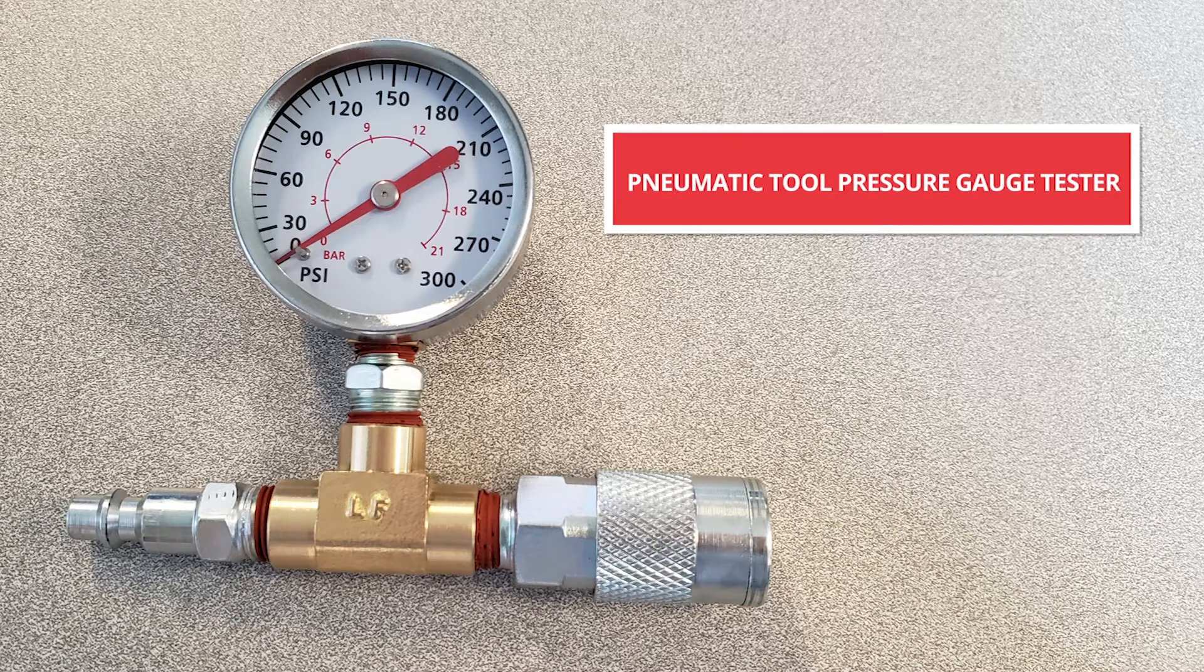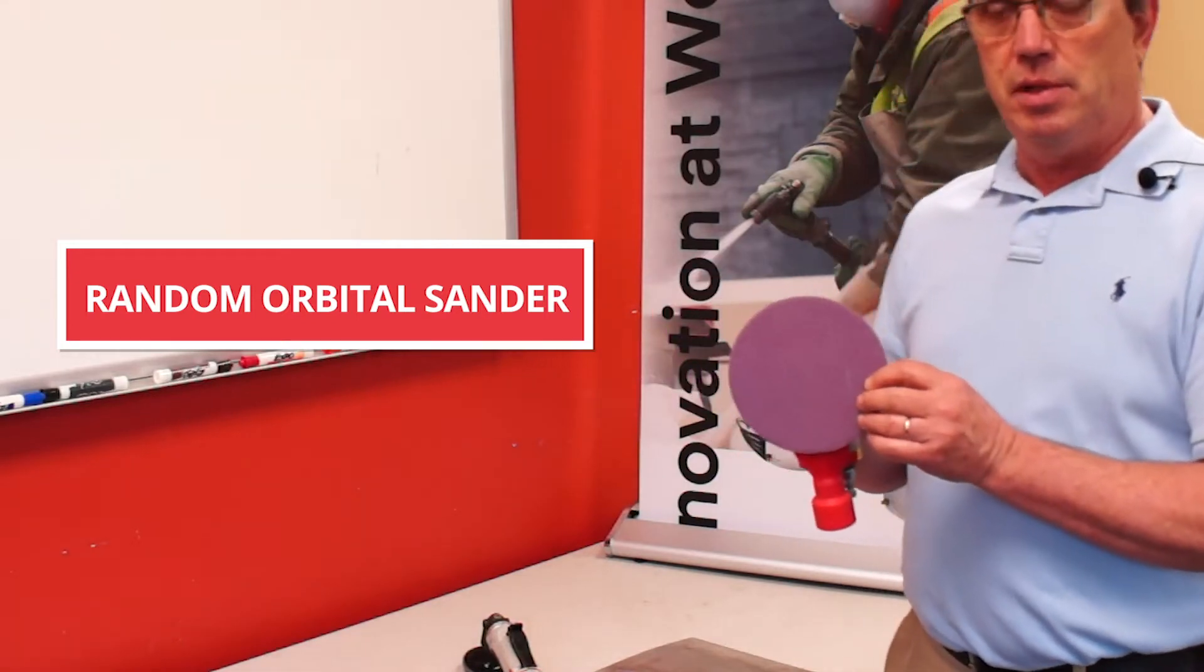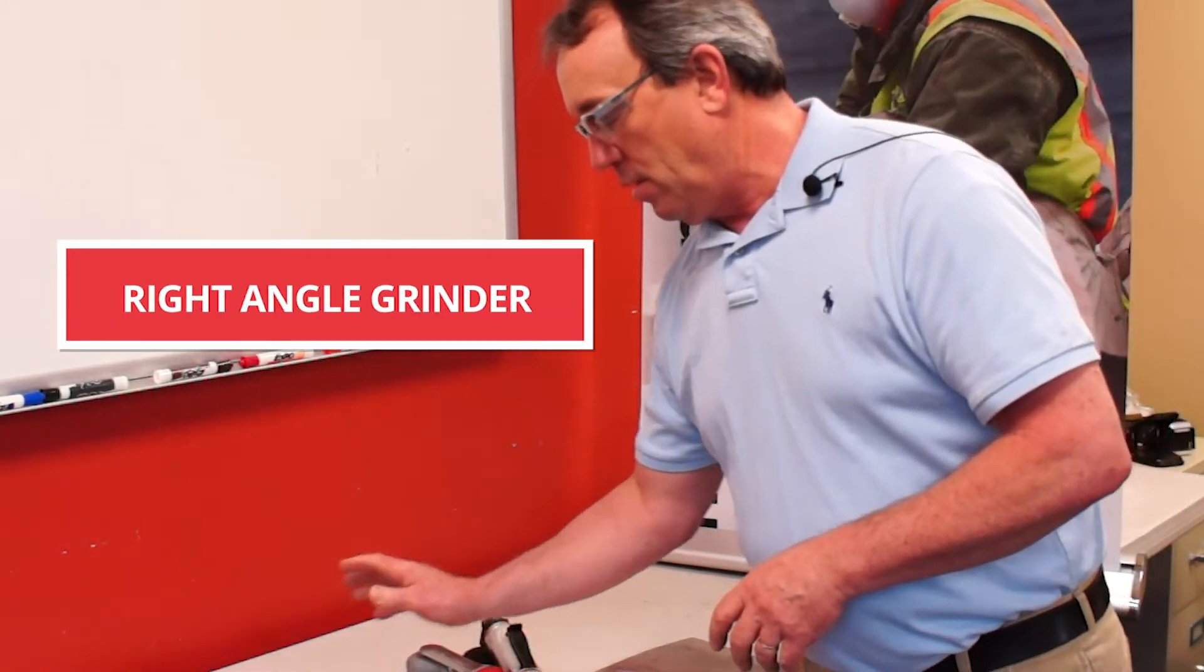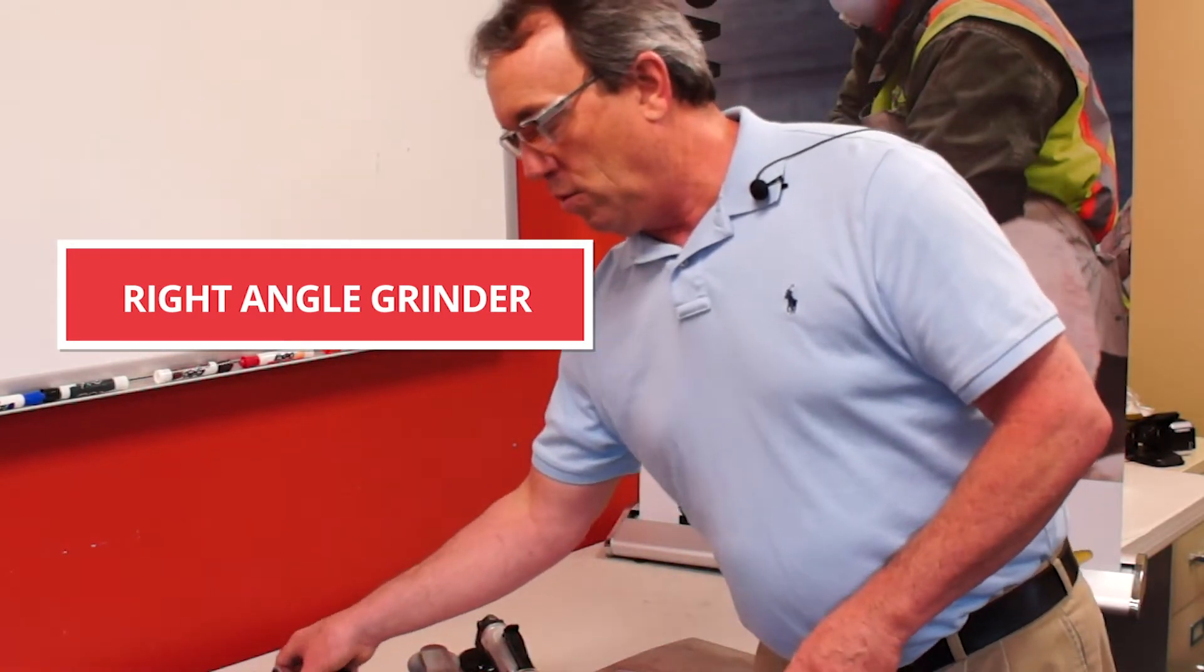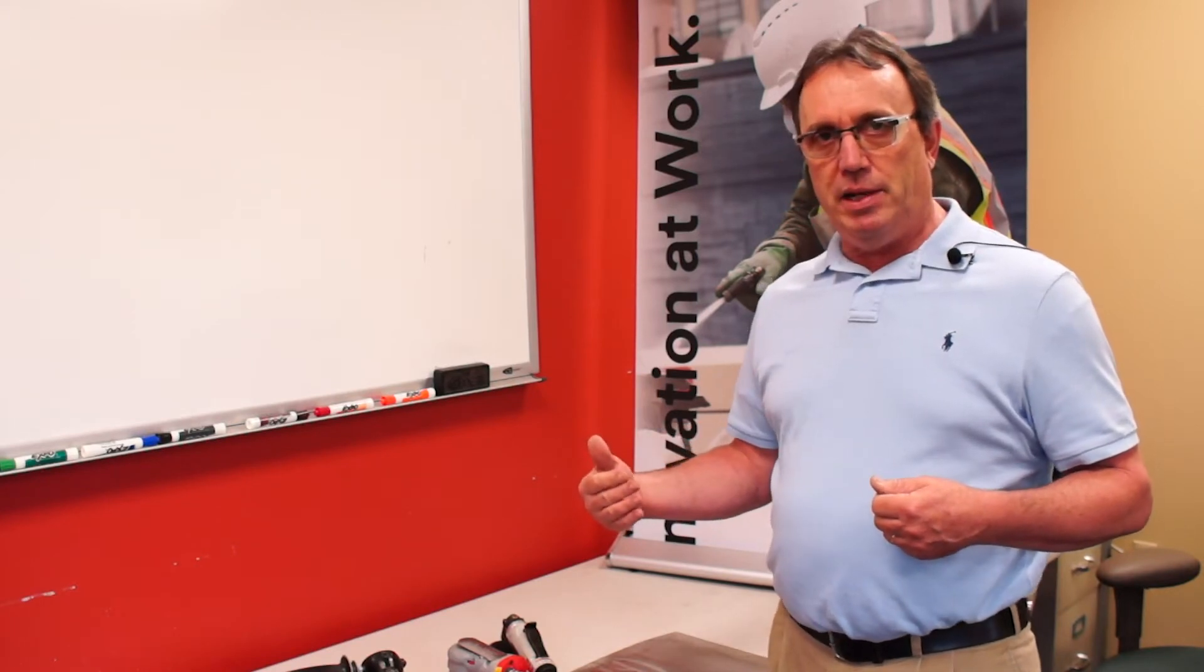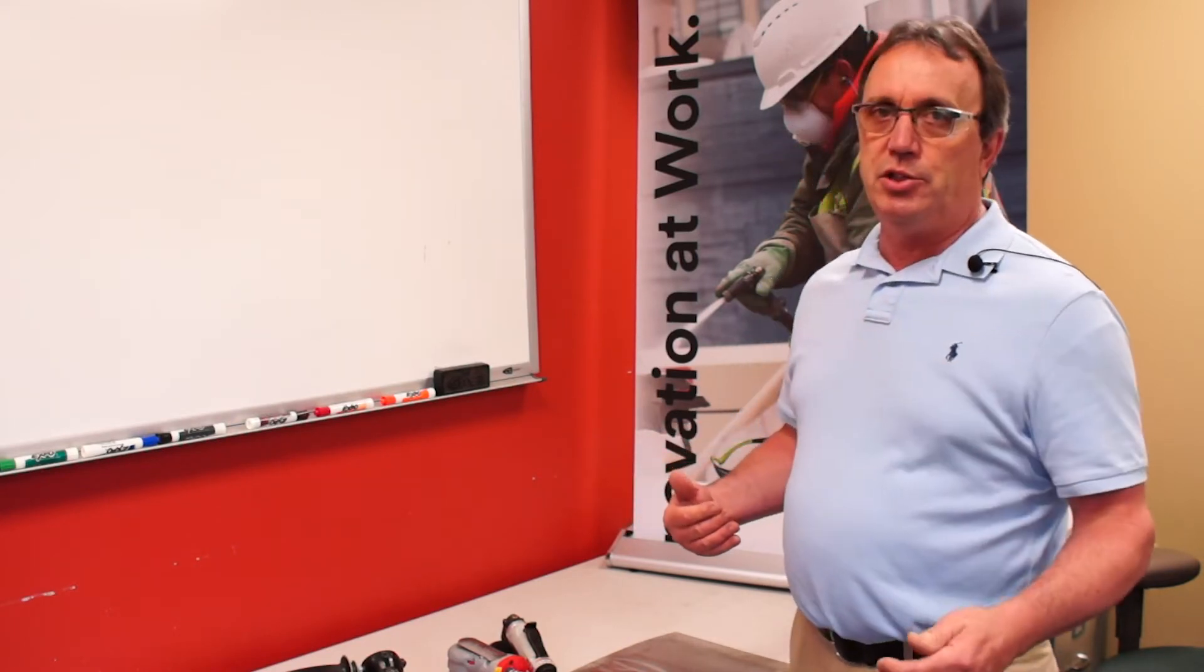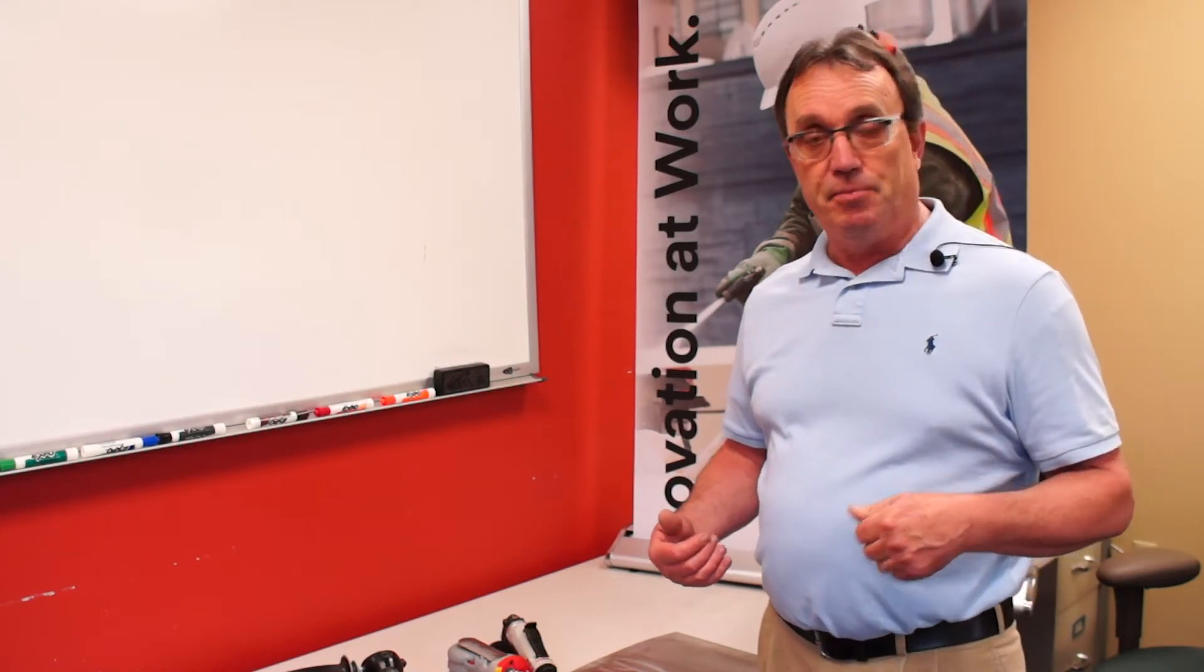This is going to help greatly to be sure that your abrasives, whether you're running a Scotch Brite disk, random orbital sander and sandpaper, right angle grinder with a grinding wheel, or a file belt tool. The importance of optimal tool speed is a direct relationship to the optimal performance of your abrasive, no matter what you're running.